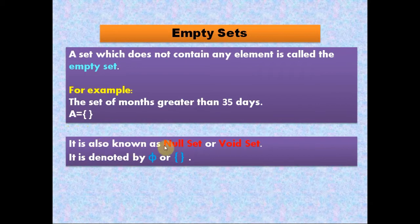It is also known as a null set or void set, and it is denoted by the symbol phi or empty curly brackets {}.